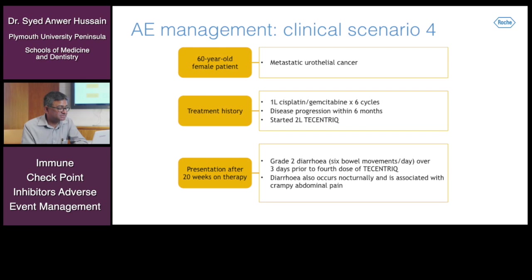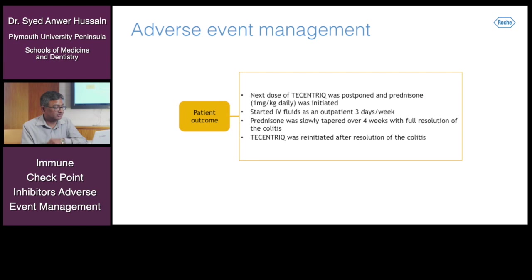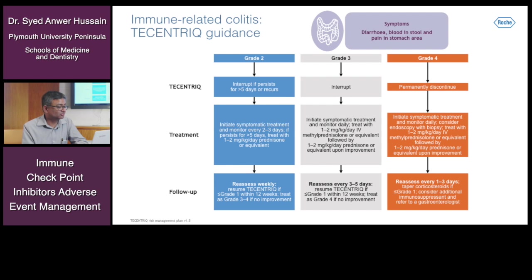Clinical scenario four: a 66-year-old female patient with metastatic urothelial cancer, post first-line cisplatin-gemcitabine chemotherapy, progressed within six months and was started on second-line T-centric. Grade 2 diarrhea occurred — six bowel movements per day over three days prior to the fourth dose of T-centric. Diarrhea occurred nocturnally as well and was associated with crampy abdominal pain. The next dose of T-centric was postponed and prednisolone was initiated at 1 mg/kg/day with IV fluids as an outpatient three days per week. Prednisolone was slowly tapered over four weeks with full resolution of colitis. For grade 2 colitis, interrupt the dose, start steroids, reassess, and resume T-centric if the colitis grade is 1 within 12 weeks.